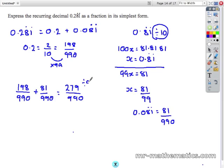Now in its simplest form, divide both by 9, and we get 31 over 110.